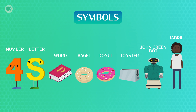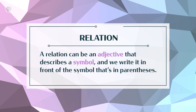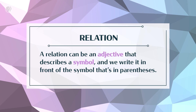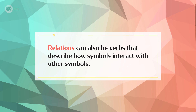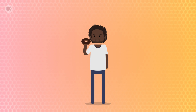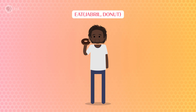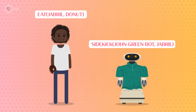One way we can visualize this is by writing symbols surrounded by parentheses, like (donut) or (Jabril). A relation can be an adjective that describes a symbol, and we write it in front of the symbol that's in parentheses. So for example, if we wanted to represent a chocolate donut, we can write that as chocolate(donut). Relations can also be verbs that describe how symbols interact with other symbols. So for example, I can eat a donut, which we write as eat(Jabril, donut), because the relation describes how one symbol is related to the other. Or, we can represent John Greenbot's relation to me using sidekick(John Greenbot, Jabril).